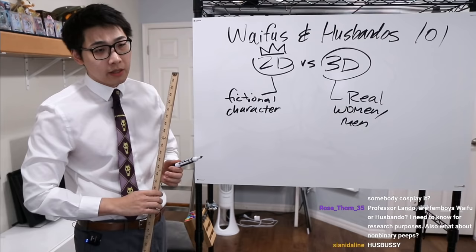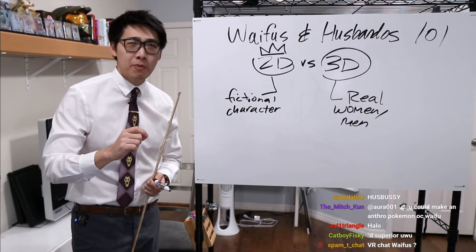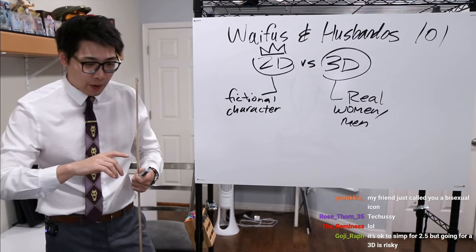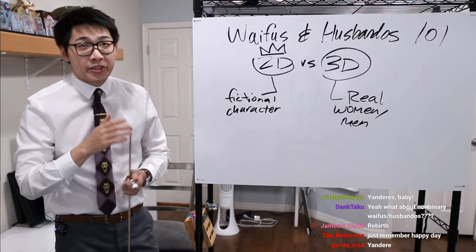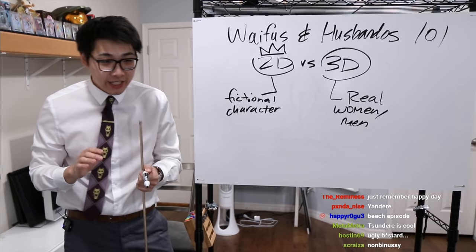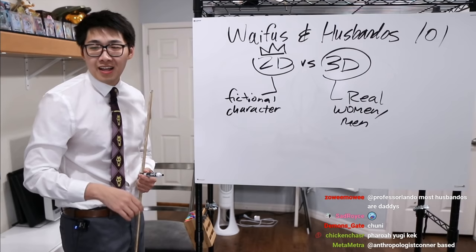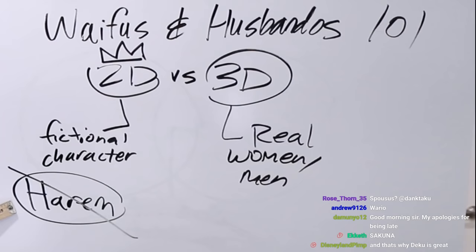We talk about anime tropes. Tropes in anime — waifus and husbandos are not necessarily a trope, but very tied into things like tsunderes, snaggle teeth, when the screen freezes at the end of the episode and becomes all washed out, like they do at the end of Kill la Kill and a lot of old school animes. The protagonist has an evil side — Nine Tails Naruto, hollow Ichigo. The reason I bring up tropes is that waifus and husbandos, there's a very clear distinction: that is not a harem. We don't lump them in with harems.